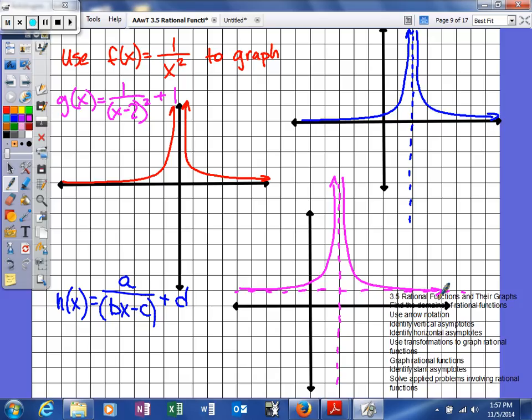Okay, and we could still use arrow notation. This time as x approaches positive infinity, we'll do a couple examples of arrow notation here. Your function value is going to approach the value of 1 from the top side.